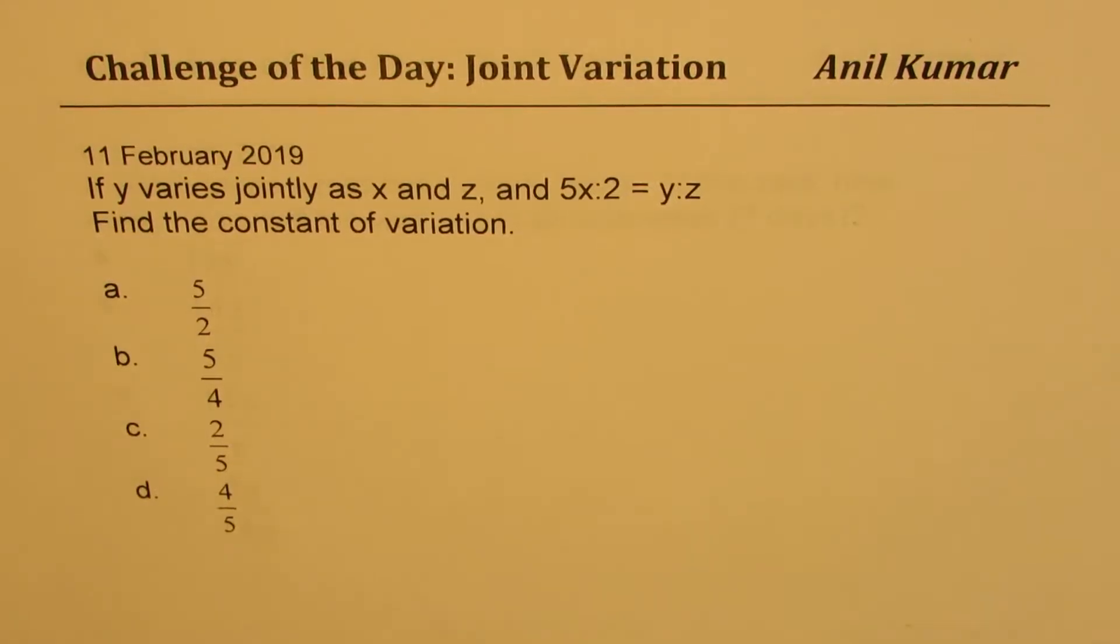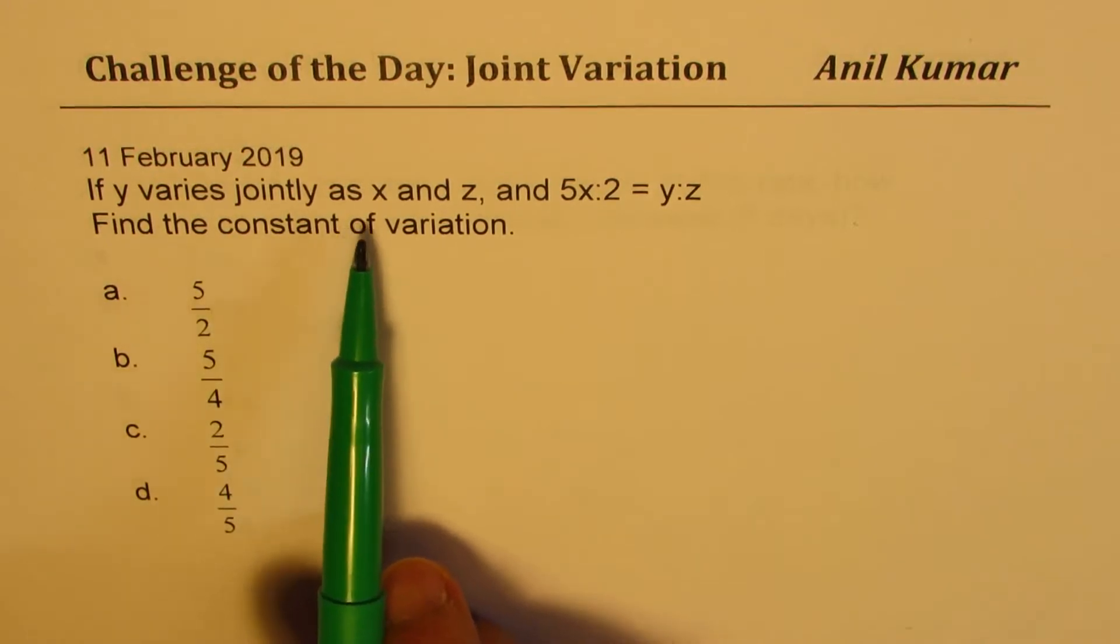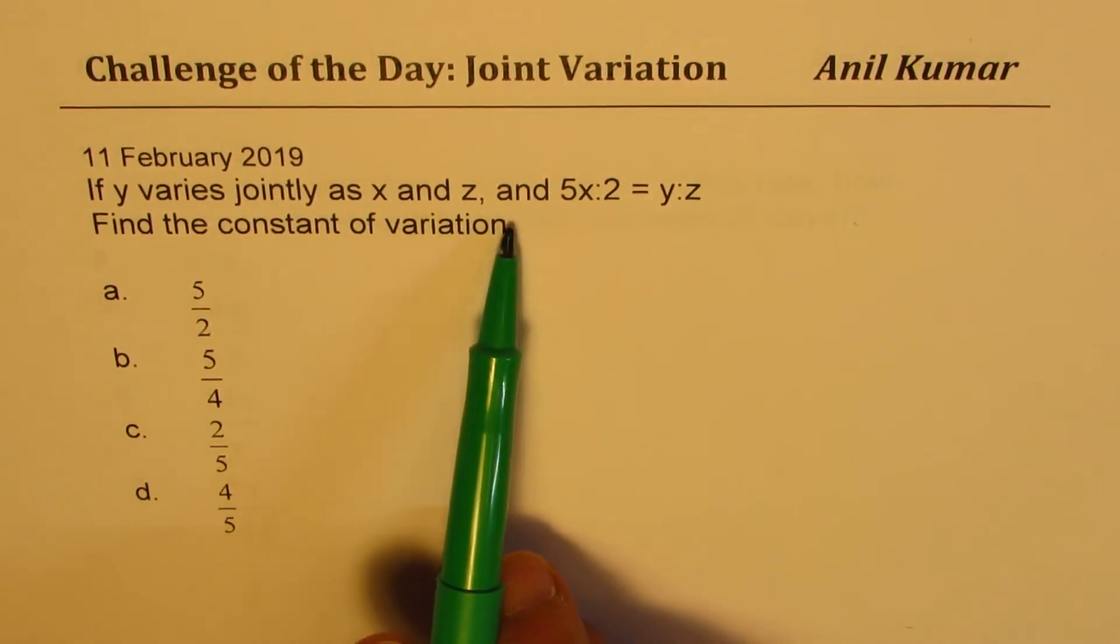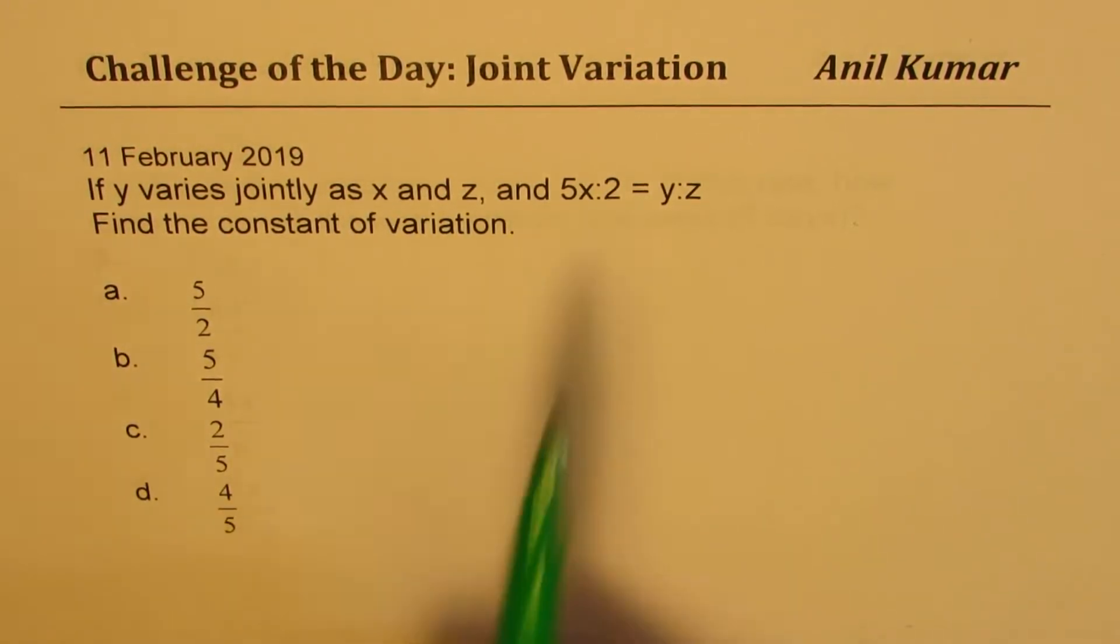I'm Anil Kumar, welcome to our challenge of the day, 11th February 2019. The question for today is: if y varies jointly as x and z, and 5x to 2 equals y to z, find the constant of variation. Four choices are given to you.